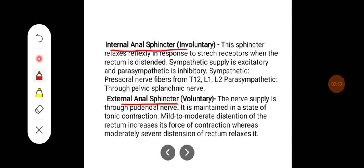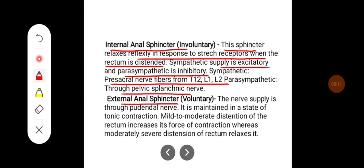The internal anal sphincter. This sphincter relaxes reflexively in response to stretch receptors when the rectum is distended. Sympathetic supply is excitatory and parasympathetic supply is inhibitory. Sympathetic supply is from the presacral nerve fibers from T12, L1, and L2, and parasympathetic supply is through the pelvic splanchnic nerve.